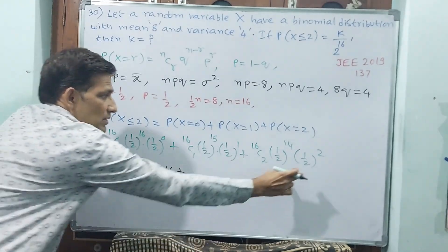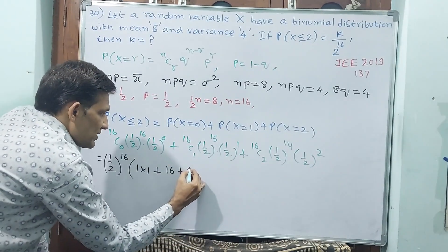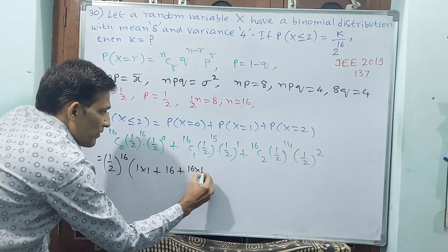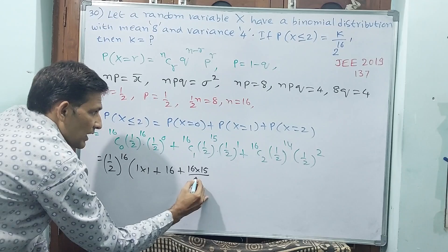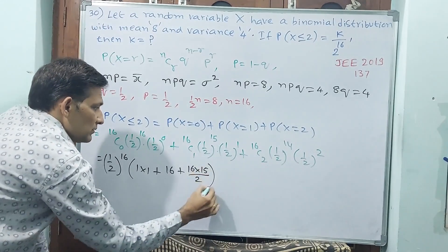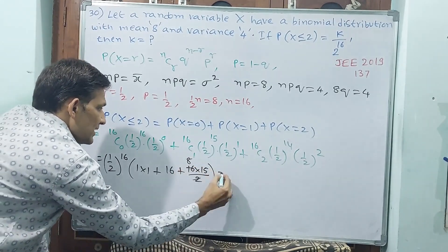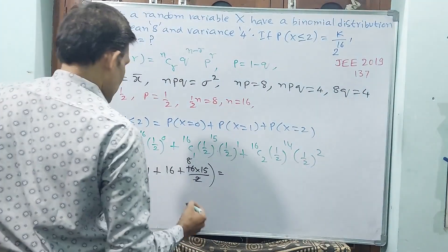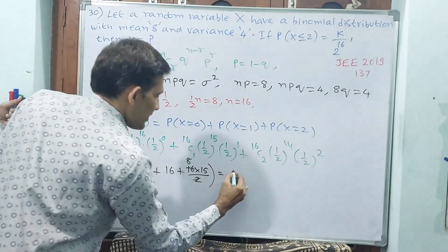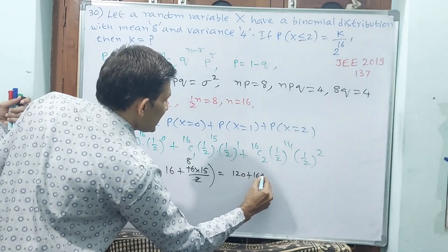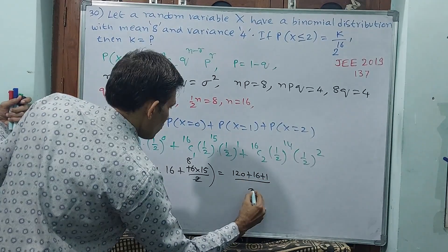16C2 means 16 × 15 divided by 2 factorial = 120. That equals 1 + 16 + 120 = 137, all divided by 2^16. See, 137/2^16.